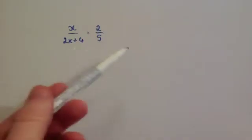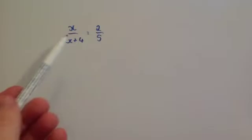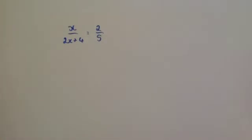one way you could do it is to times both sides by 2x plus 4, and then times both sides by 5 to get rid of what's on the denominators, and then expand your brackets and solve and so on.